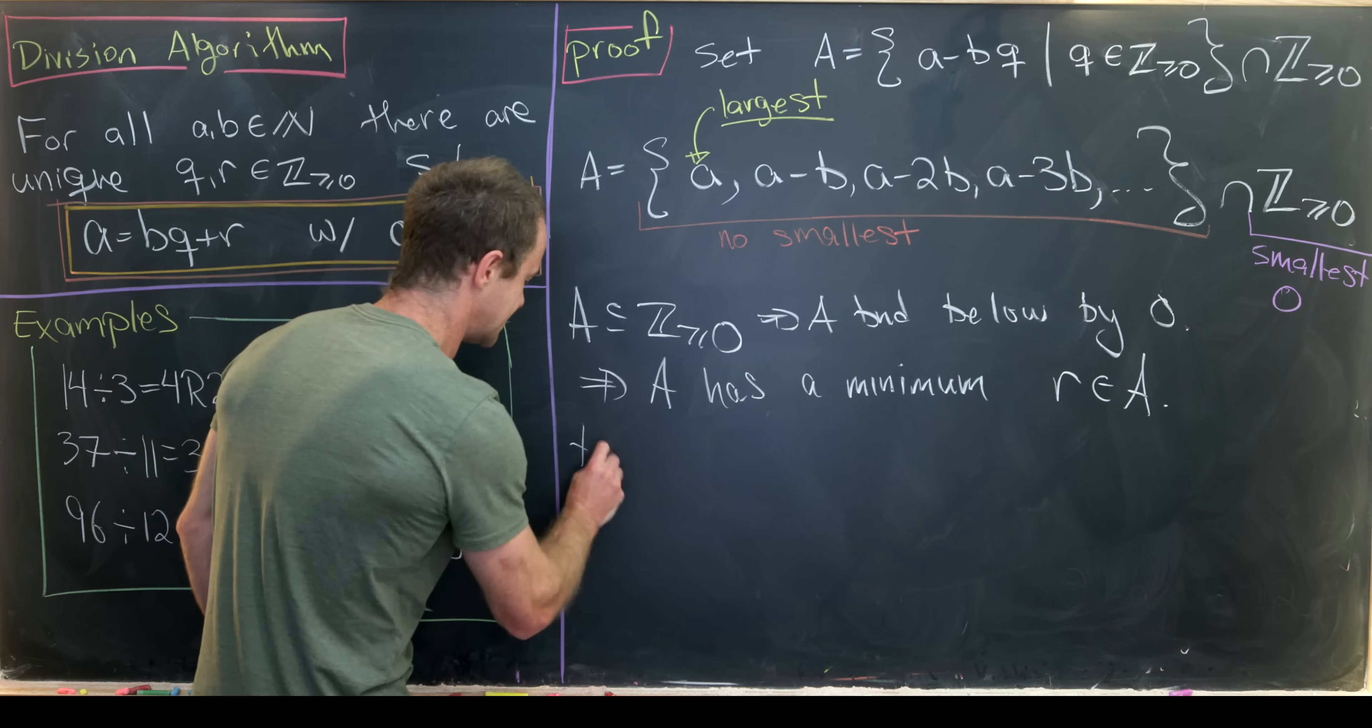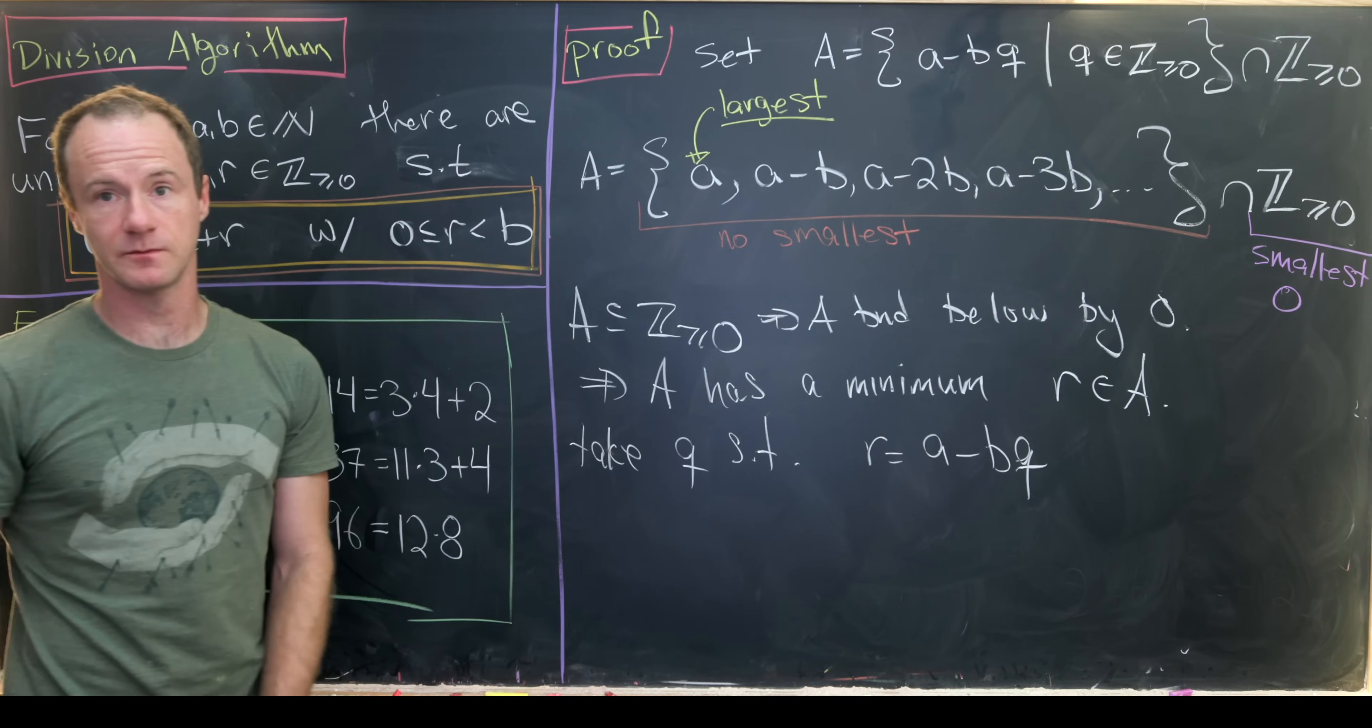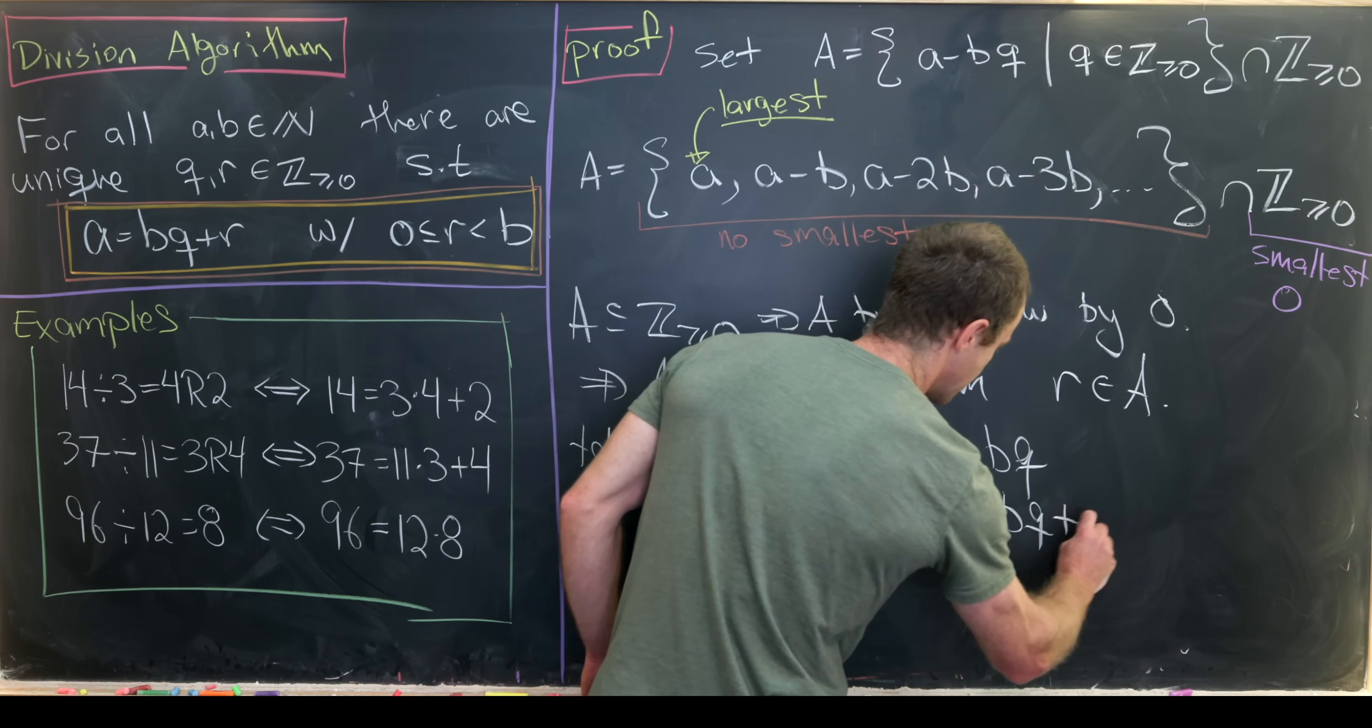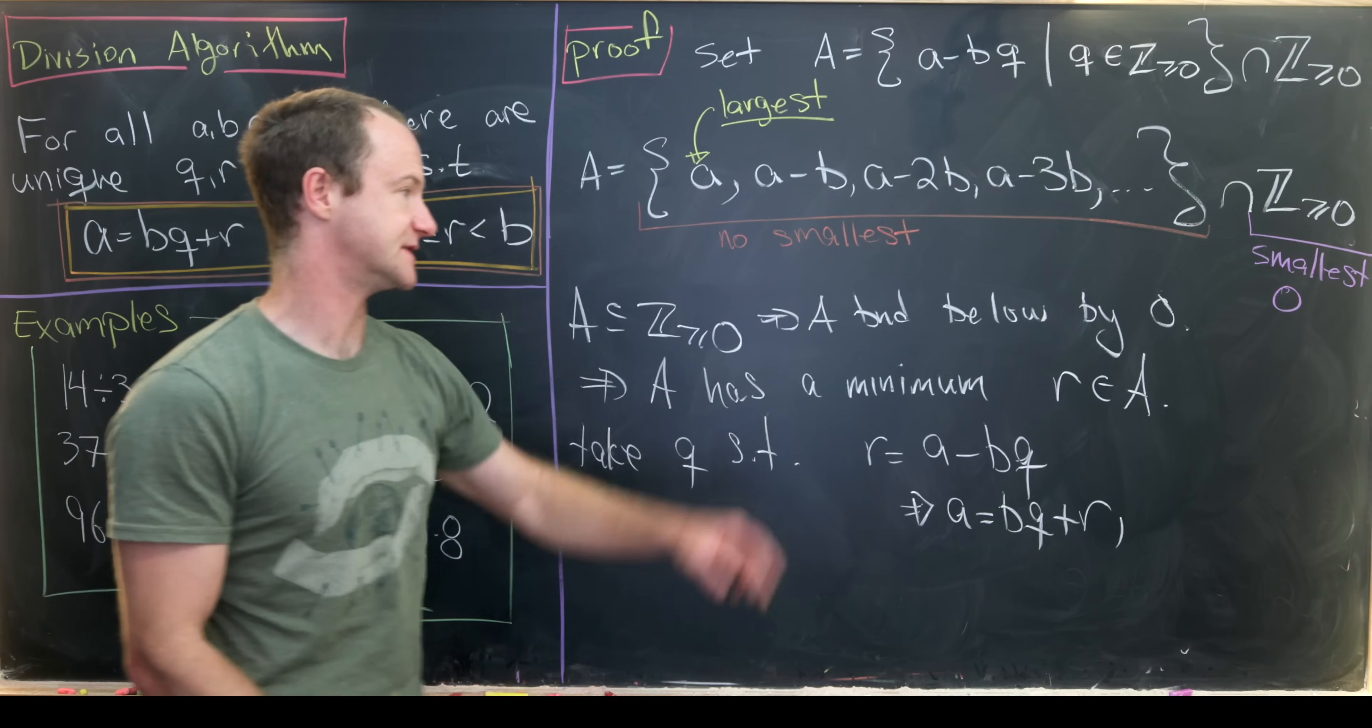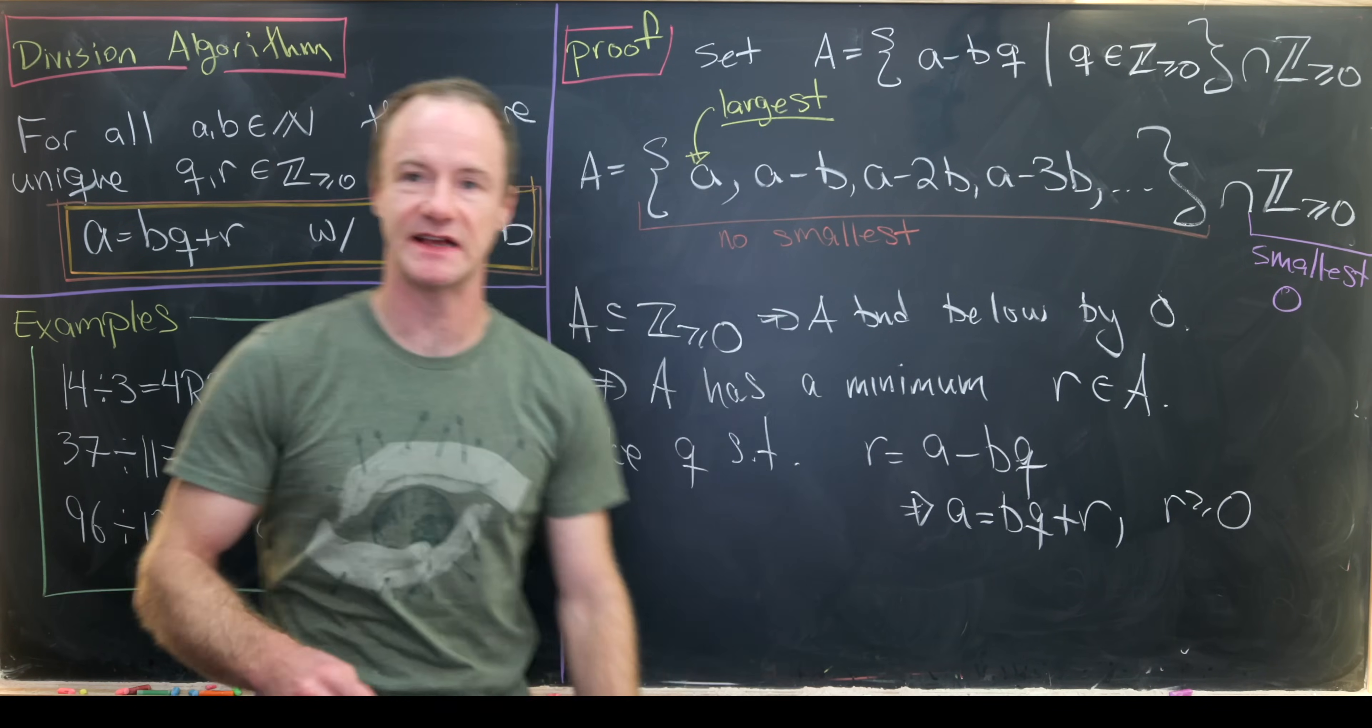And then let's take q such that r equals a minus b times q. But then moving some things around, we'll see that a is equal to bq plus r as needed. And now immediately, because of the fact that r is in A and A is bounded below by 0, that tells us that r is bigger than or equal to 0.